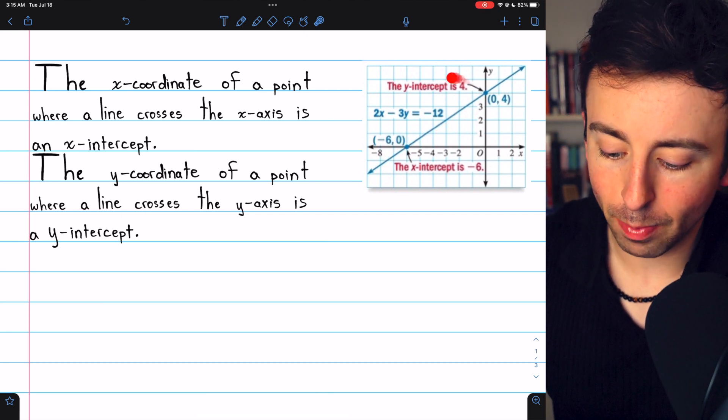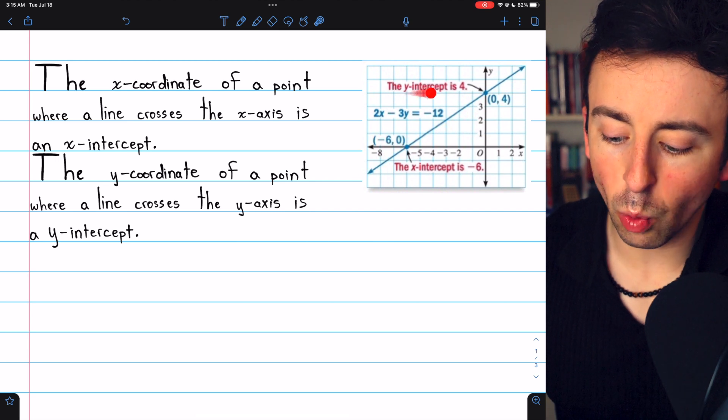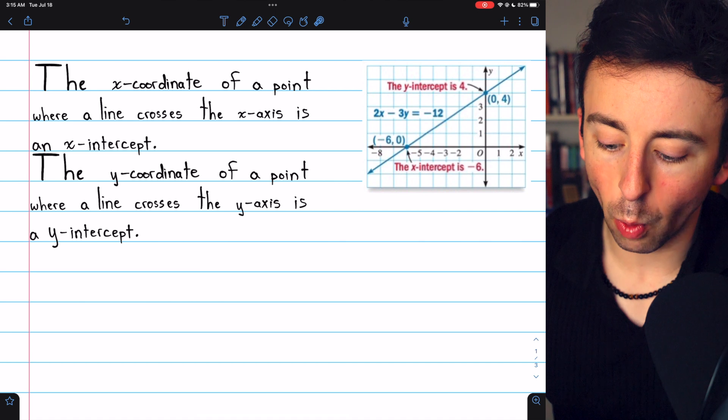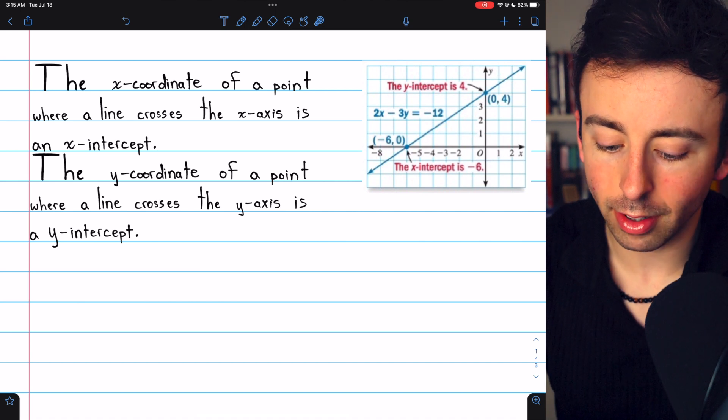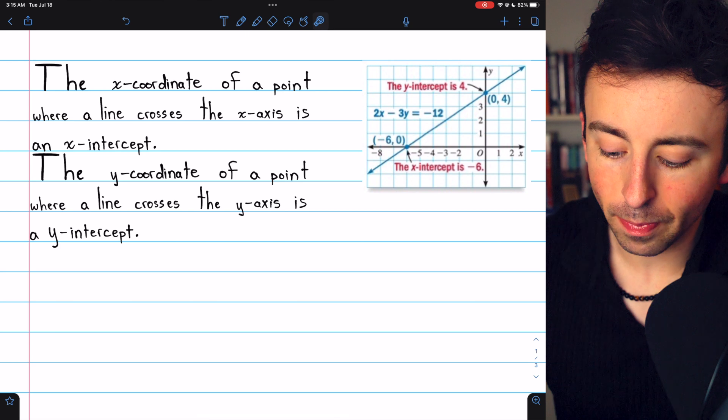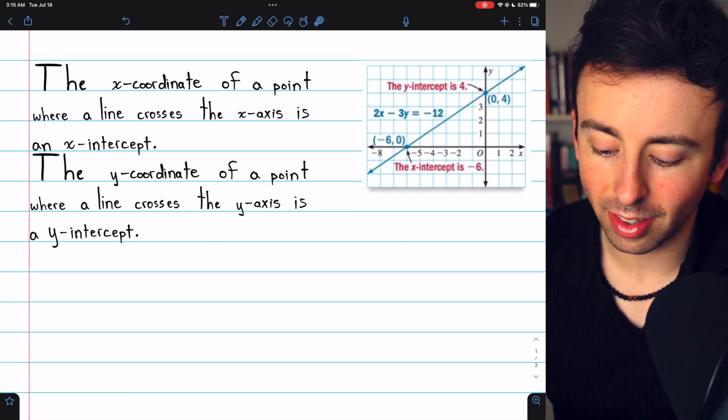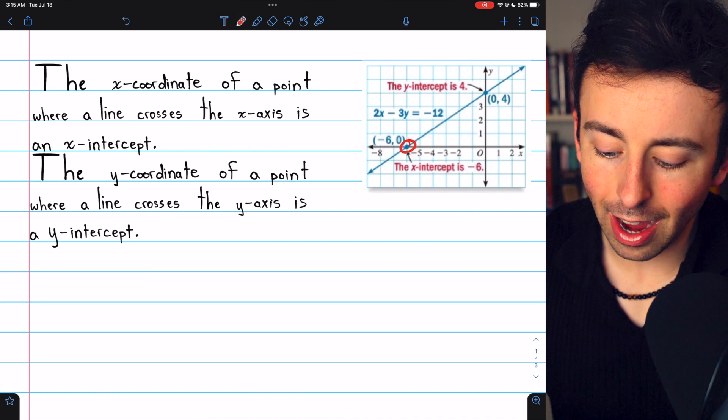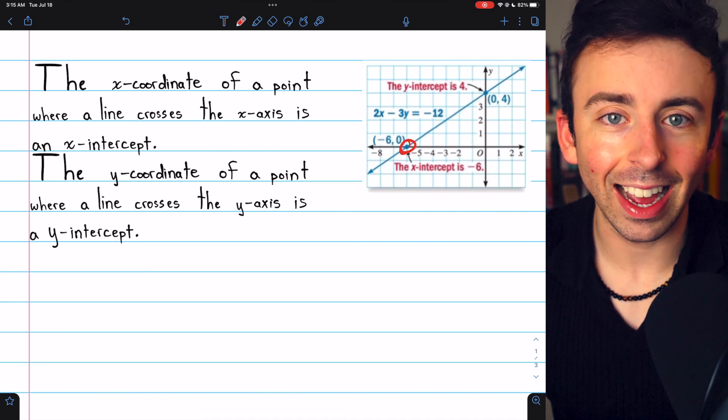For a visual example, in this graph we can see that the y-intercept is 4 because at y equals 4, the line crosses the y-axis. Similarly, the x-intercept is negative 6 because at x equals negative 6, the line crosses the x-axis.